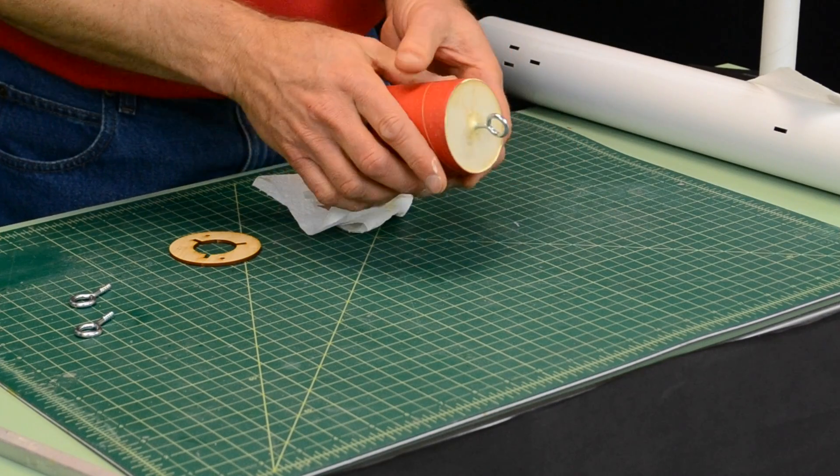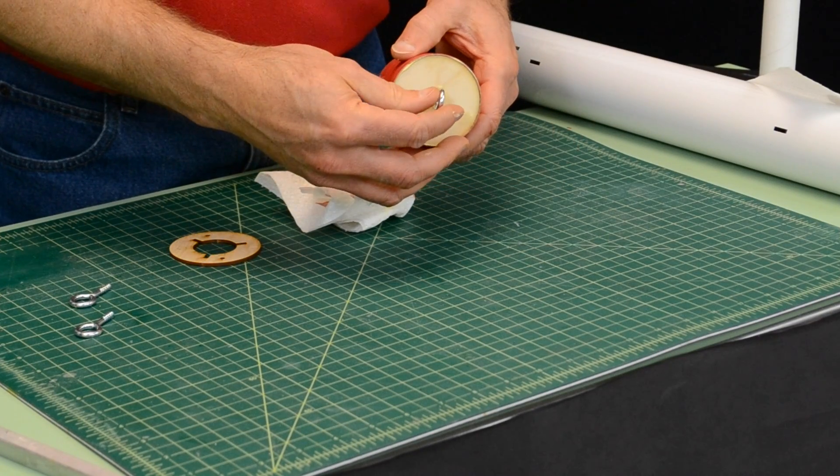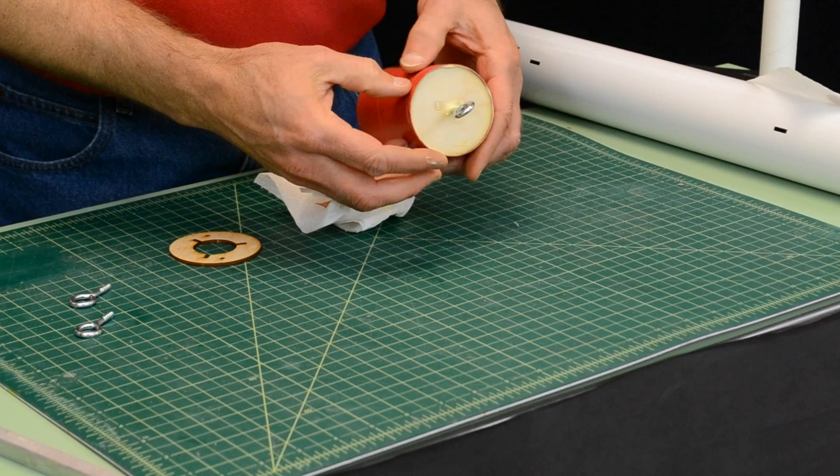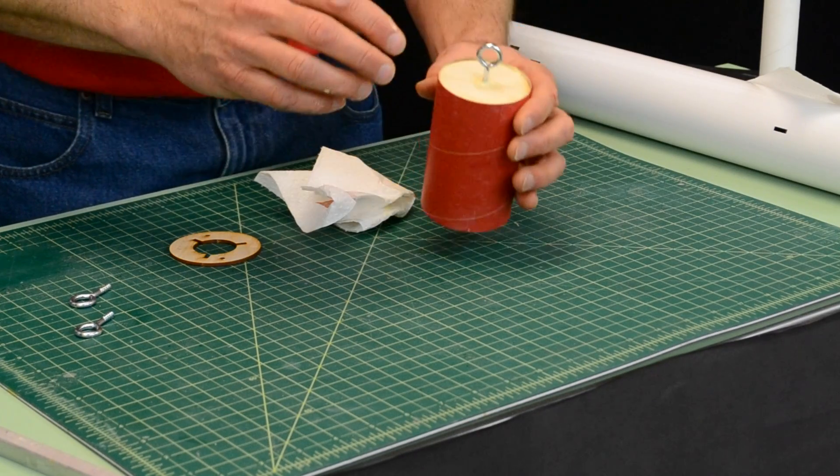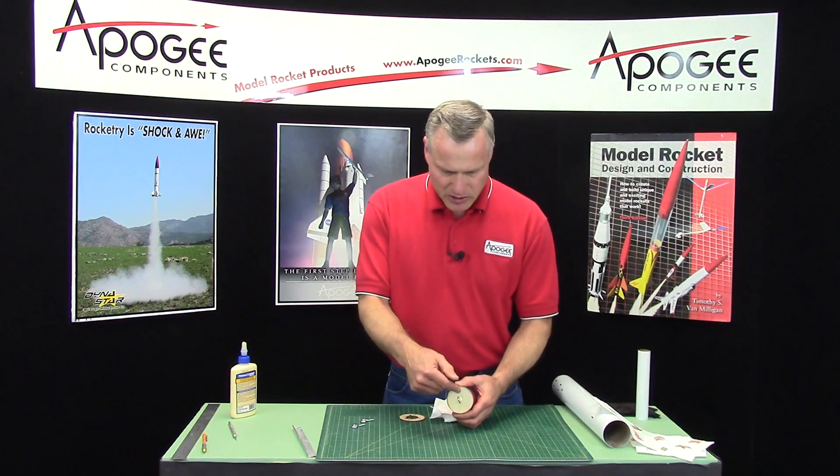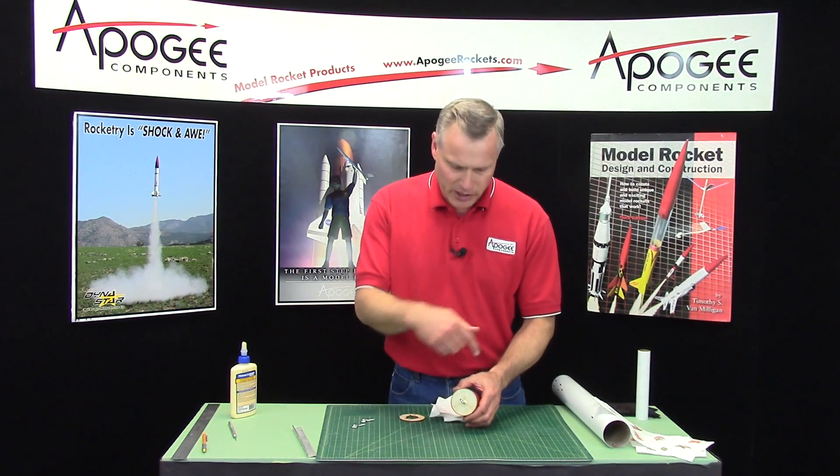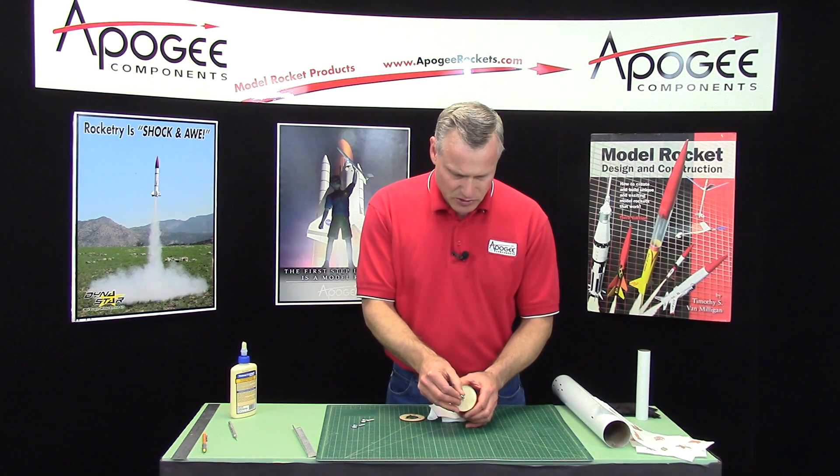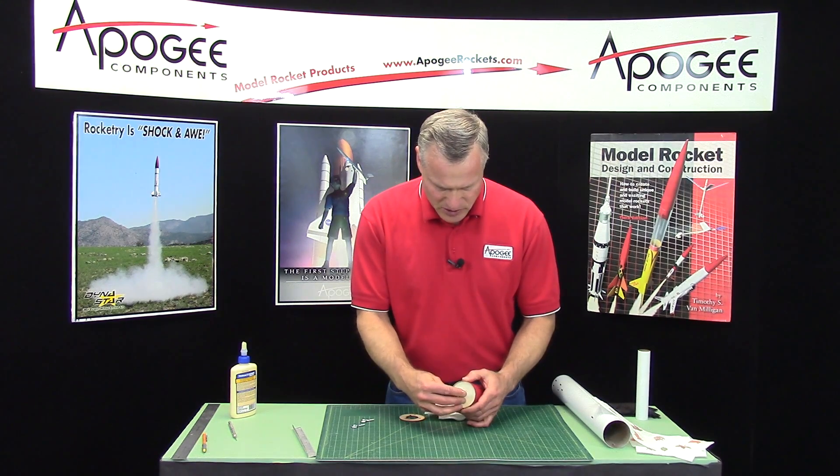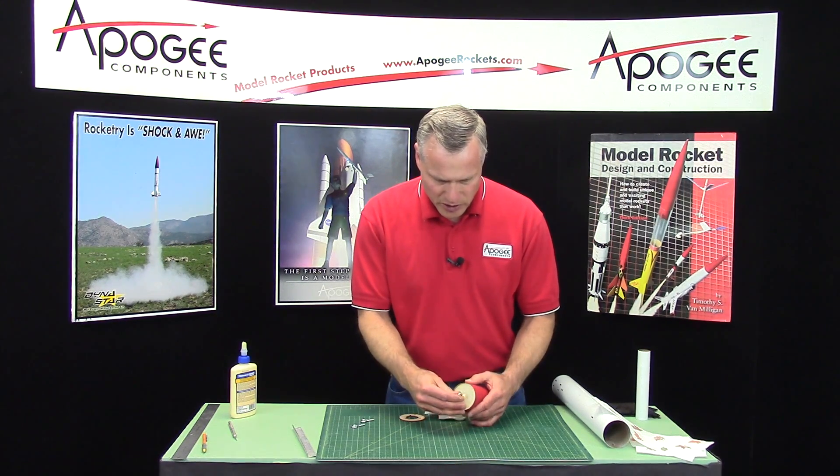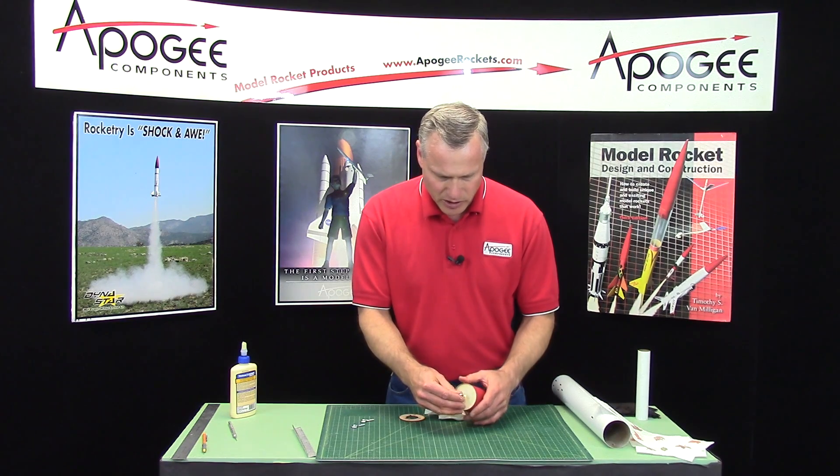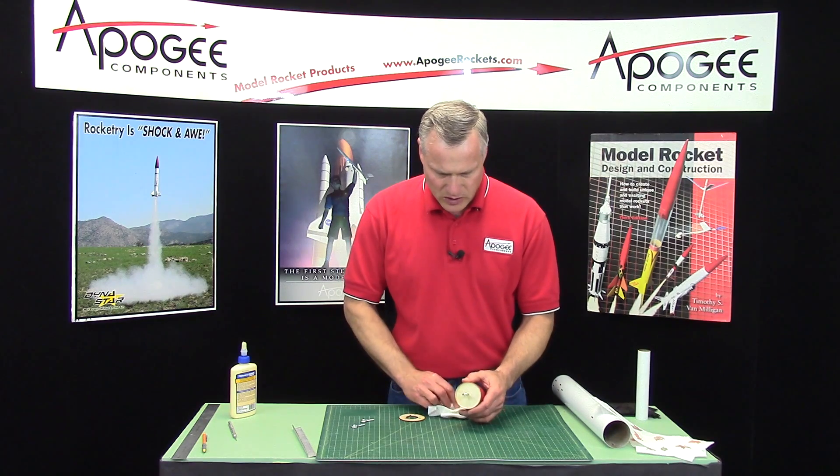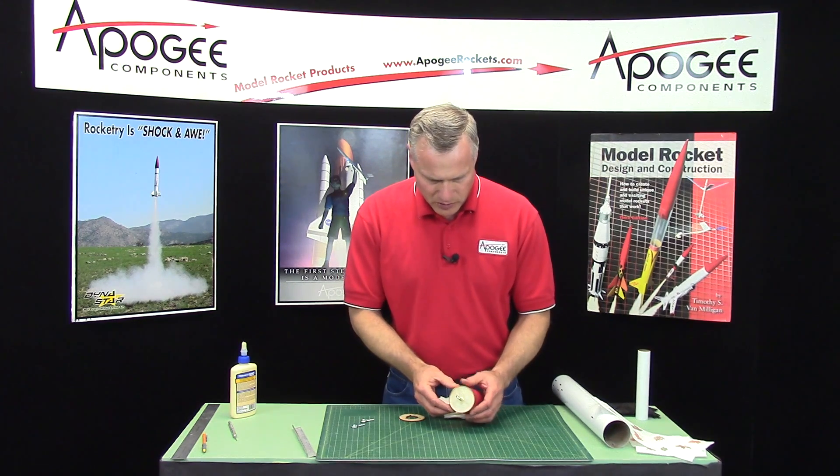Now this is going to want to slide around a little bit. So I'm just going to wait for that glue to catch before I set it down, because otherwise, because of the weight of the screw eye, it's a little bit off balanced. And even though it's a nice snug fit, with the wet glue in there it acts kind of like a lubricant and it just wants to slide around. So I'm going to hold that for a couple of minutes here.